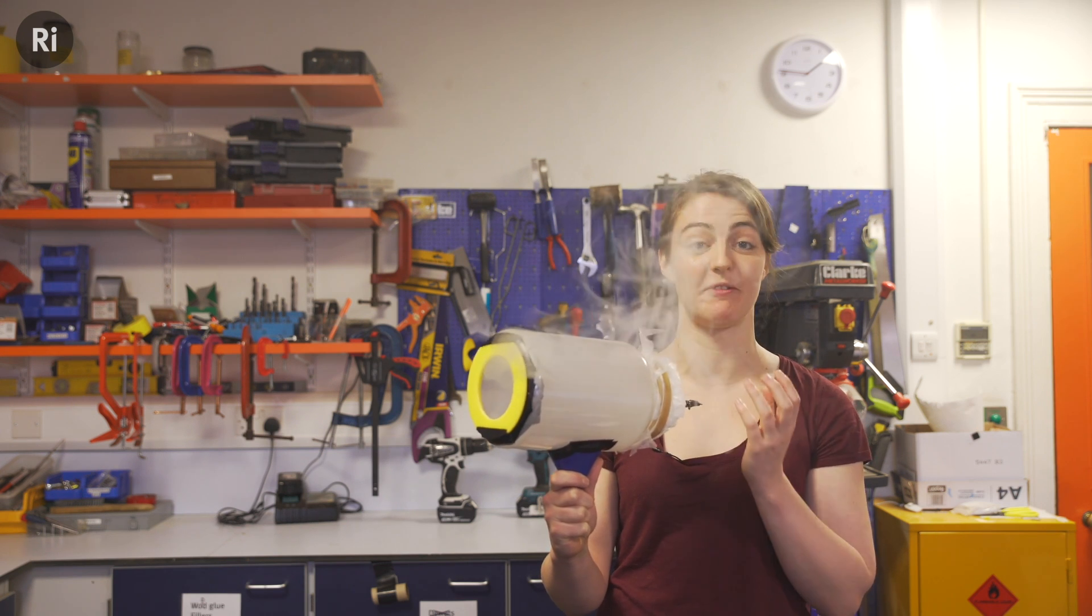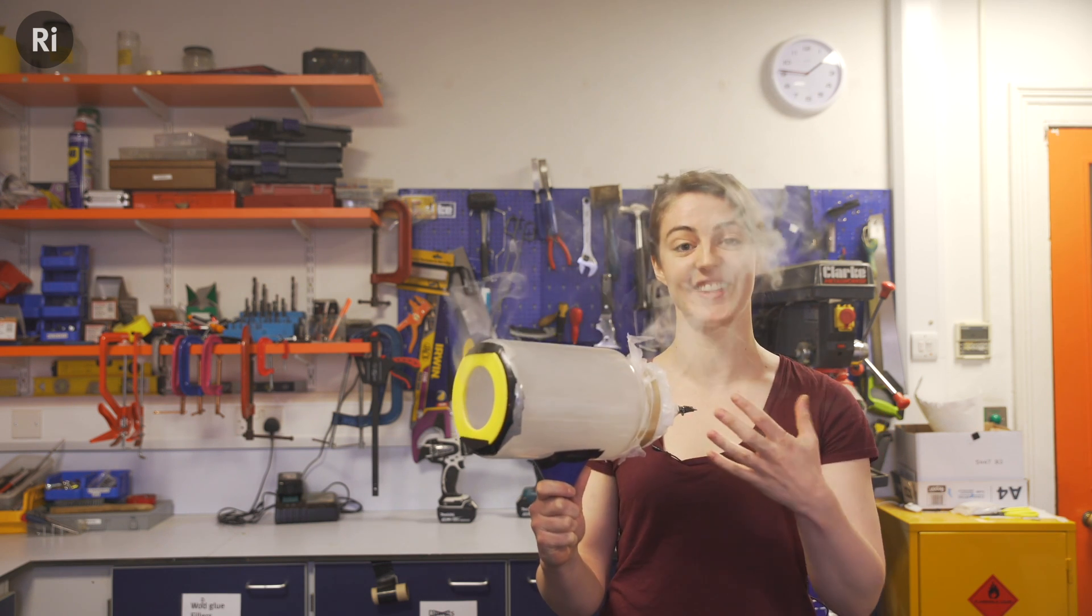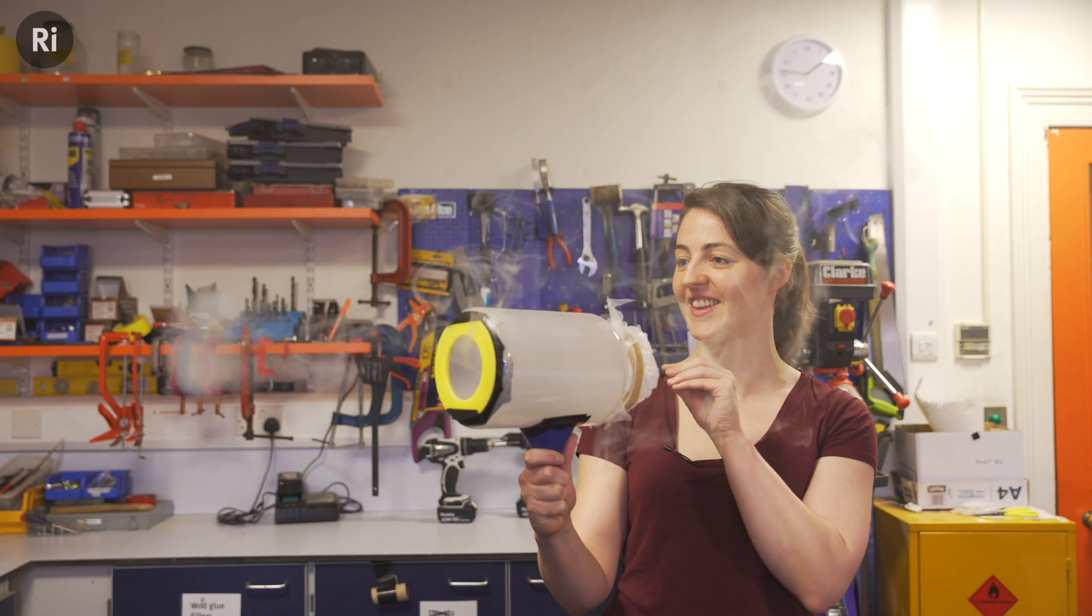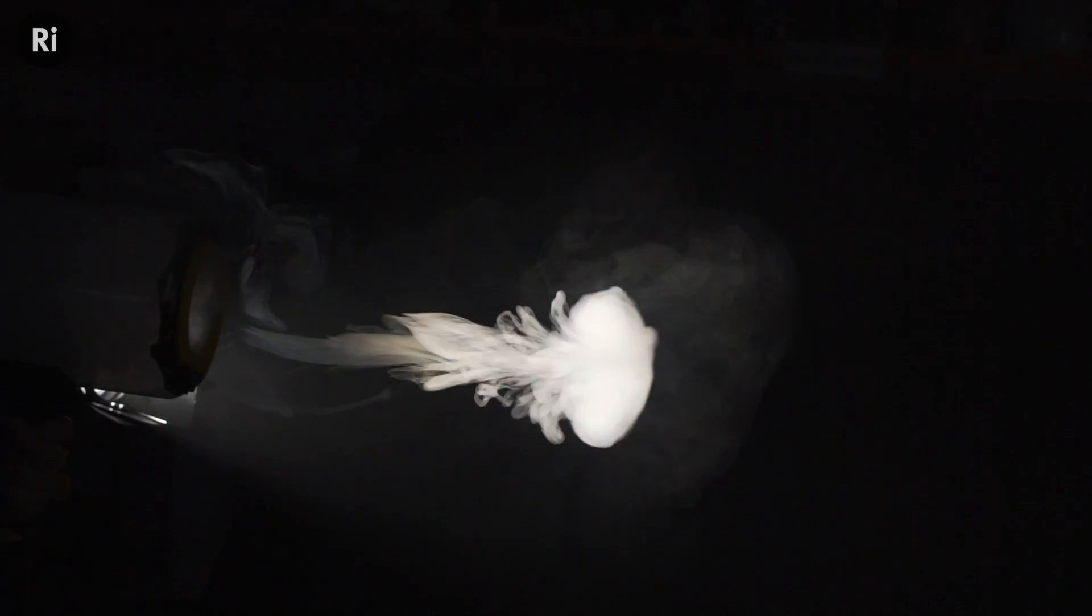Vortex rings are formed when a fluid, which can be a liquid or a gas, is forced through a hole. This forces the fluid to curl back in on itself, which creates a distinctive ring shape called a torus.